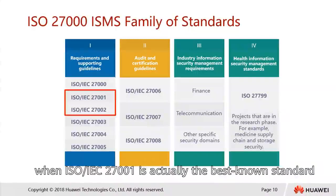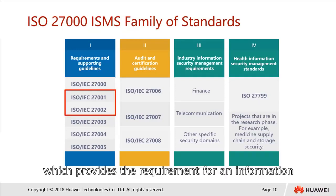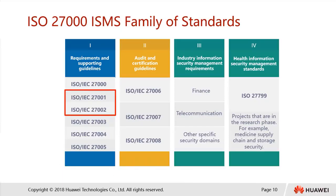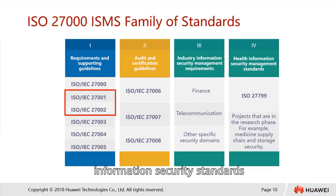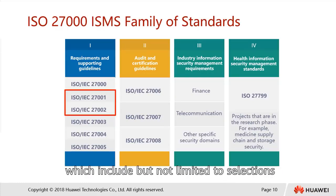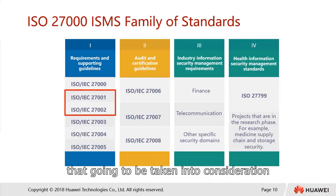ISO/IEC 27001 is the best known standard in the family, which provides requirements for an information security management system. ISO 27002 is actually a supplement to 27001, which provides guidelines for organizational information security standards as well as information security management practices, including but not limited to selection, implementation, and management of controls to be taken into consideration by organizations.